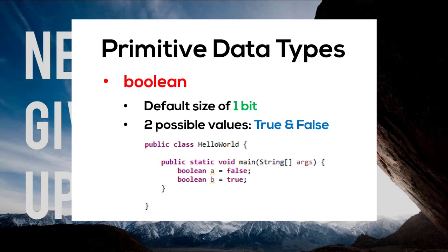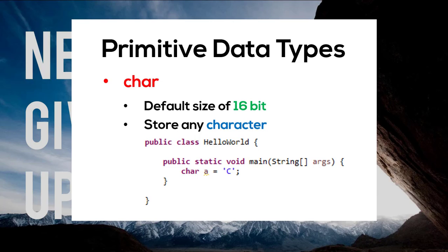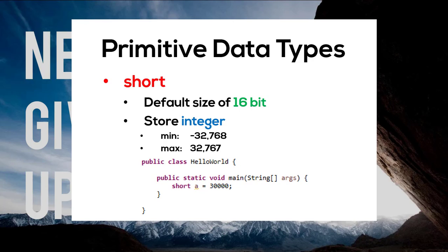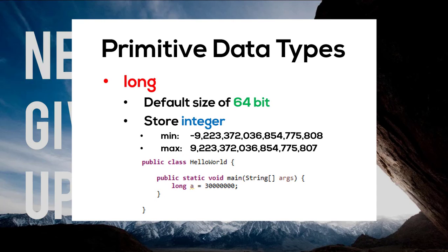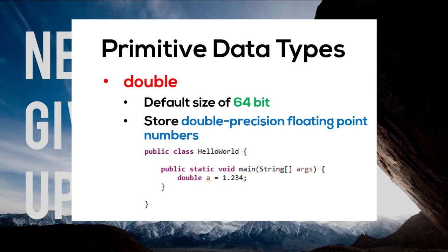The boolean data type has a default size of 1 bit and there are only two possible values: true and false. Char data type has a default size of 16 bits and can store any character. Byte data type has a default size of 8 bits and stores an integer with a minimum value of -128 and a maximum of 127. Short data type has a default size of 16 bits, storing integers from -32,000 to 32,000. Int data type has a default size of 32 bits, storing integers from -2 billion to 2 billion. Long data type has a default size of 64 bits, storing integers from -9 quintillion to 9 quintillion. Float data type has a default size of 32 bits and stores single-precision floating point numbers. And lastly, double data type has a default size of 64 bits and stores double-precision floating point numbers.